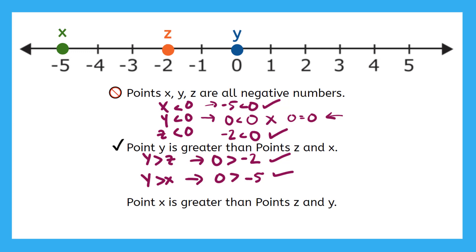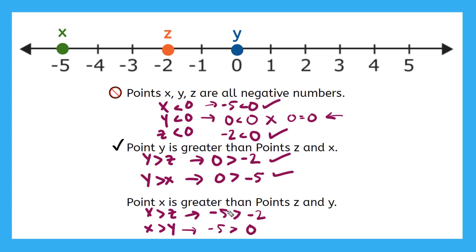Let's try that last one. Point x is greater than point z and y. So this is saying x is greater than z and x is greater than y. Are these true? If x is equal to negative 5 greater than z, which is negative 2 — and x is equal to negative 5 greater than y, which is equal to 0 — are these inequalities true? Negative 5 is less than negative 2, so that's not true. And is negative 5 greater than 0? No way. We know that 0 is greater than any negative number. So this statement is also false.